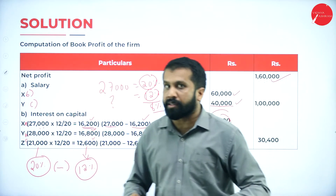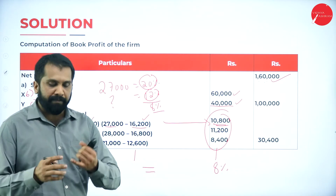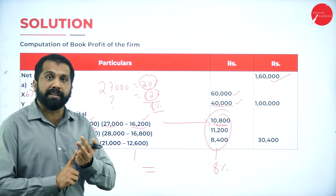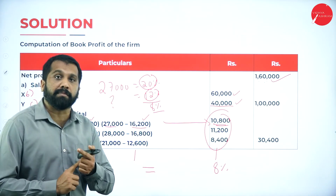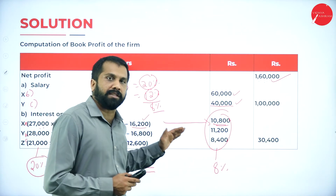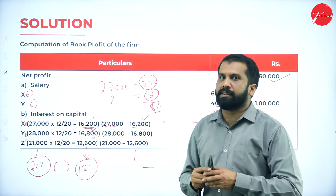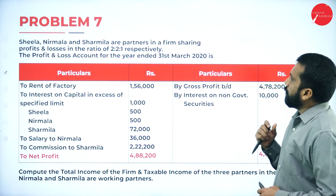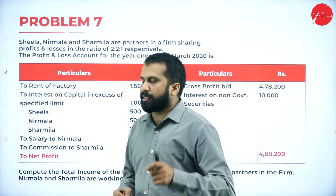Admissible items are not there - such as rent received, interest on securities, or depreciation as per income tax - since that additional information is not given in this question. Now we move to problem number 7, the last problem of this session.